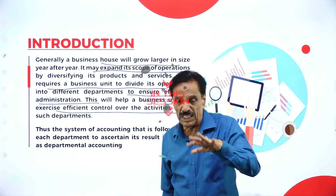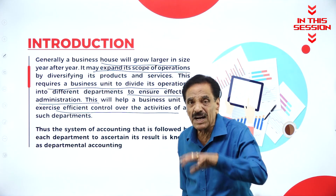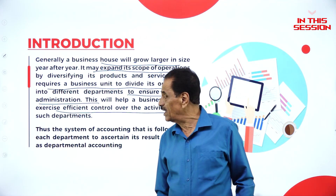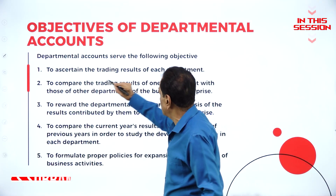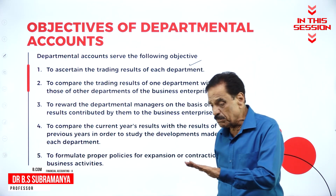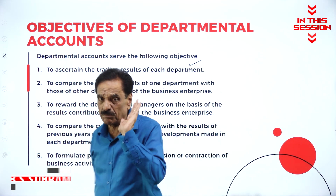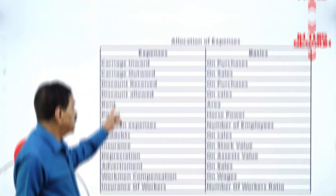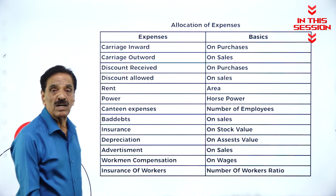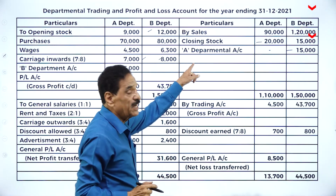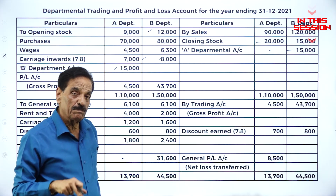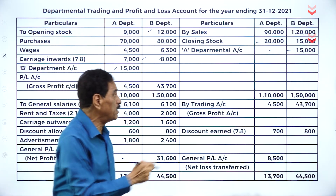In order to control the activity, we divide into a number of departments, a number of units. Each unit is called a department. To ascertain the trading result of each department, to find out the gross profit or gross loss of each department. Discount received on purchases, discount allowed on sales. This is internal transfer from B department to A department worth fifteen thousand.